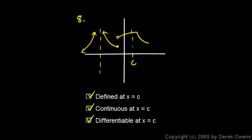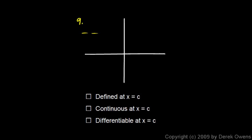Graph number nine has a horizontal asymptote and a cusp, and the point we're concerned about is the cusp. The function is defined there and continuous — you could draw through that point without picking up your pencil — but there is no derivative at that point because it is not smooth there.